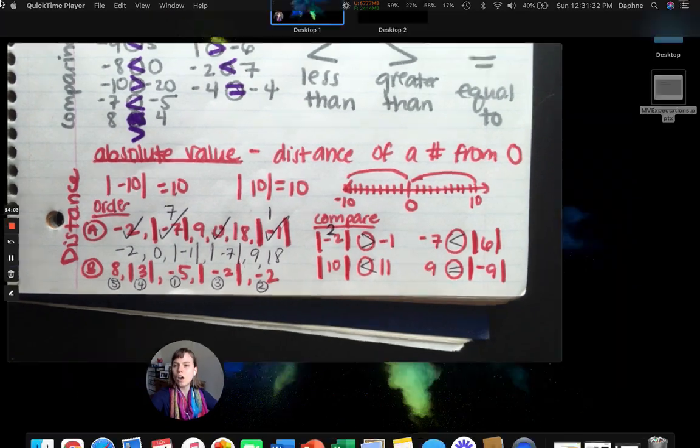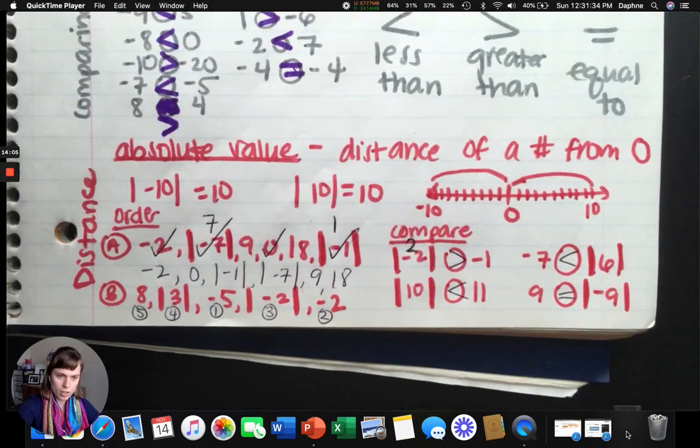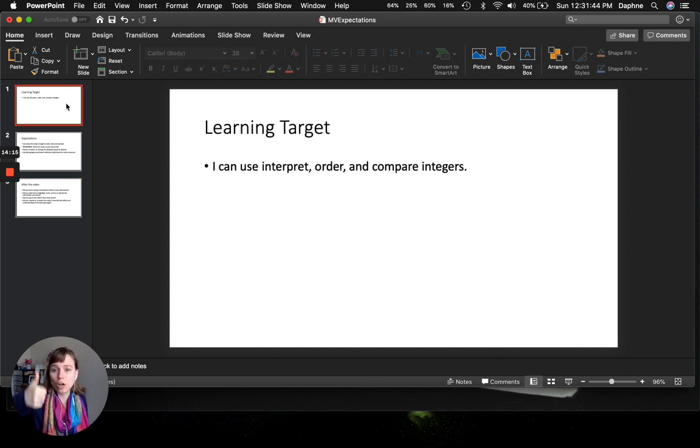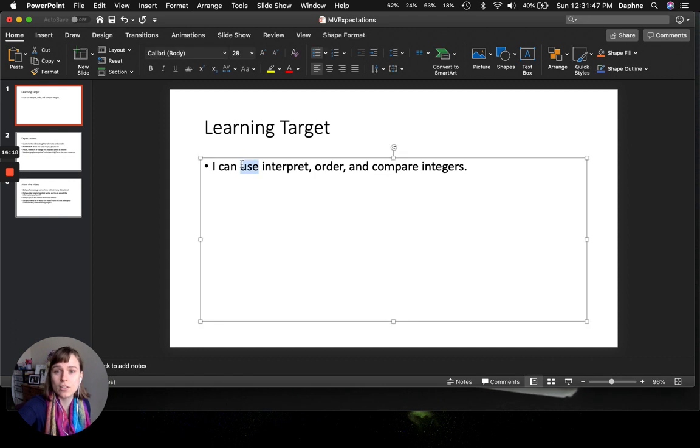All done. Were you focused? Does this make sense? Ask me questions if you're stuck. You need to know, do I understand this or not? Can you interpret order and compare integers? And this should not have a use in it. It should just be interpret. Can you interpret order and compare integers? Can you define what absolute value is? And then can you also interpret order and compare integers when you take the absolute value? So that's what you need to be able to do. All right. Have a great day. Bye.